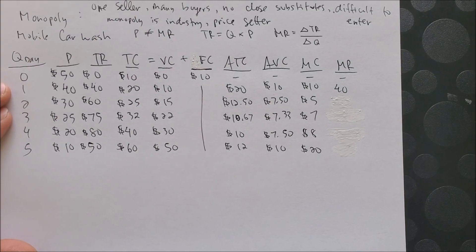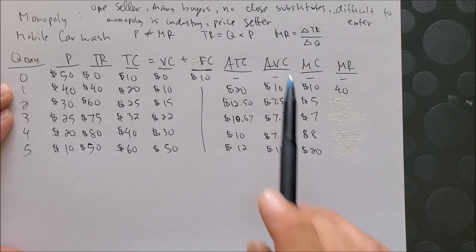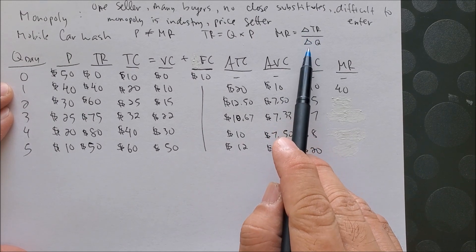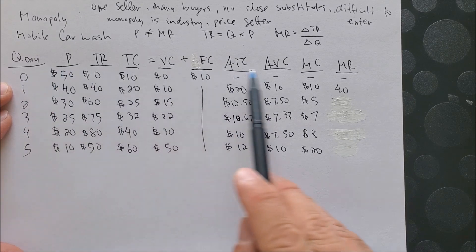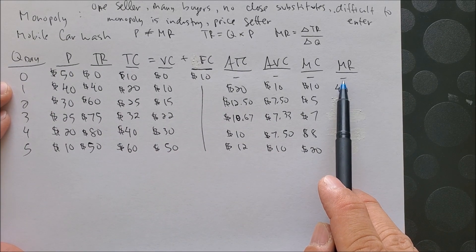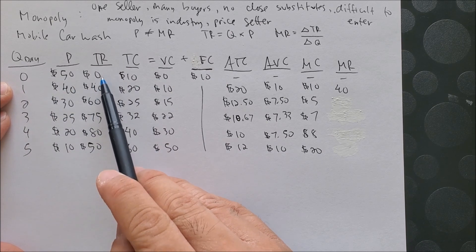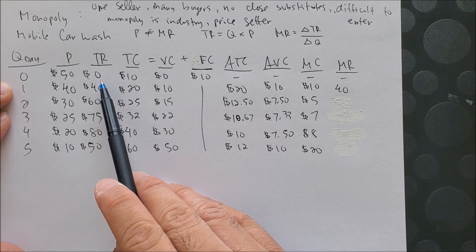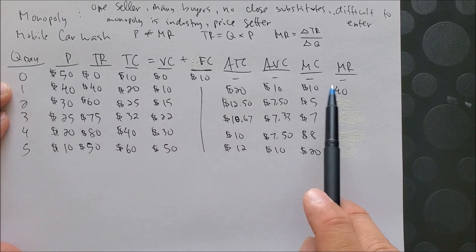So now we can find the MR, and we know that MR is a function of the change in TR over the change in quantity. So if we look at 0, there is no change, hence why we have the hyphen. But from 0 to 1, we do see a change in total revenue. This is 40 minus 0, that's 40, over 1 minus 0, which gives us 40.